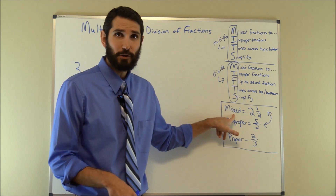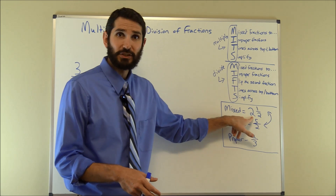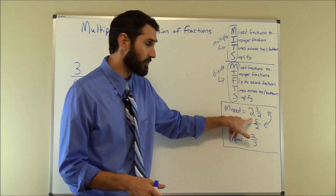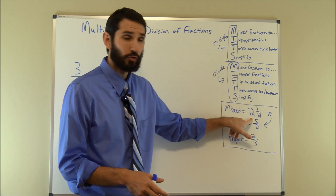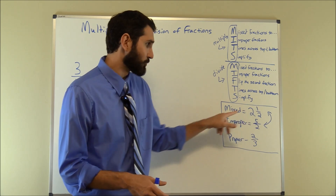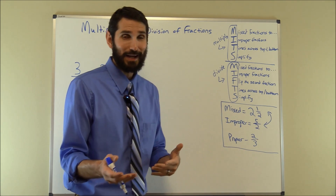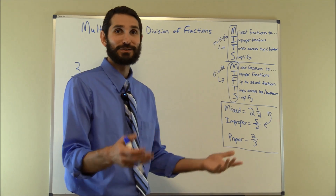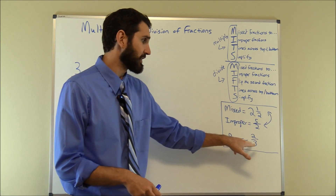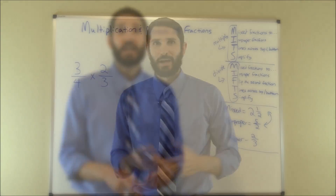A mixed fraction or mixed number is where you have a whole number and a fraction — two and a half is an example. An improper fraction is where the numerator is greater than the denominator, so the top number is greater than the bottom number. A proper fraction is just where the top number is less than the bottom number — two-thirds is an example of that.